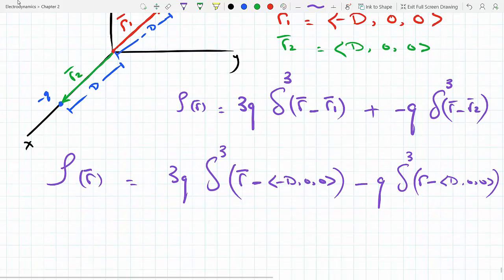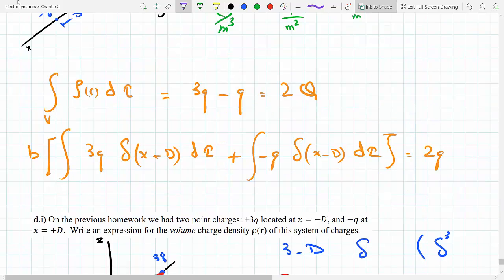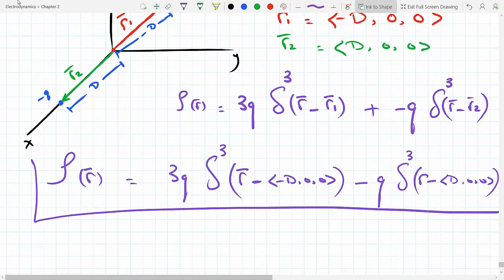The other place where the first one vanishes is at x equals d, where the first term goes away and the second term picks up a charge of minus q at r2, that is at x equals d. So this here would be your final answer.